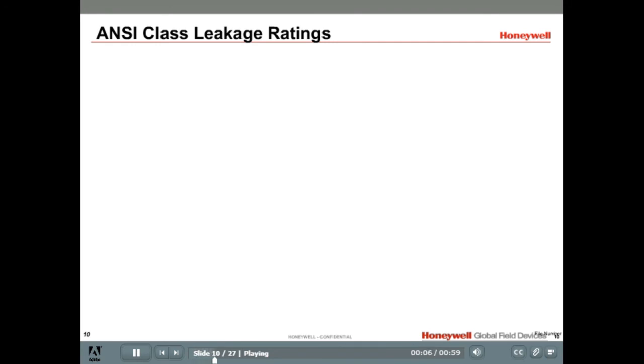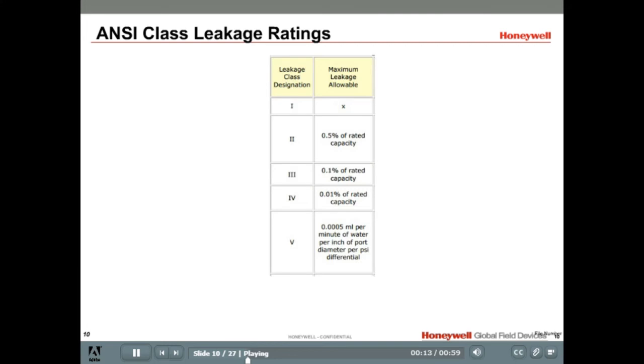While ANSI class 125 and 150 ratings are the pressure and temperature ratings for a valve, the ANSI class seat leakage ratings specify the allowable leakage that can occur through a closed valve. The table on the right summarizes the different leakage class ratings. The maximum leakage allowable for each class varies. For example, a class 3 rated valve can handle fluid leakage up to 0.1% of the valves rated CV between the ports when closed. All Honeywell valves are rated to either class 3 or class 4.